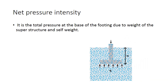The next term is net pressure intensity. It is the total pressure at the base of the footing due to the weight of the superstructure and self-weight only — the overburden pressure is not taken into account in net pressure intensity. That is the difference between gross pressure intensity and net pressure intensity.